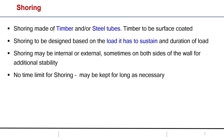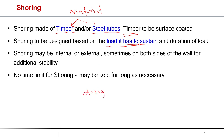Shoring is made up of either timber or steel tubes. If you are using timber, the surface of the timber needs to be coated. Shoring must be designed based on the load it has to sustain — you need to assess how much load is coming so that you can select the appropriate sections and apply the supports accordingly.